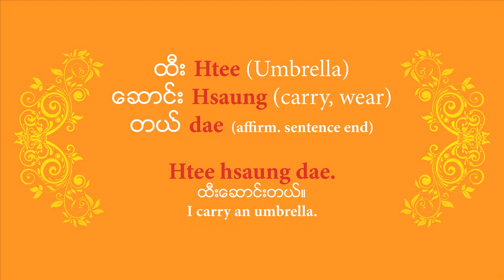With that, you can go on and say something you might do or something that might happen as a result of the rain. For example, you can say 'ti sounde' — I carry an umbrella. I'll break it down: 'Ti' is the word for umbrella, 'sounde' is to carry, and 'de' is the affirmative sentence-end particle. Put it all together: 'ti sounde' — I carry an umbrella.